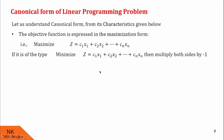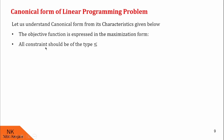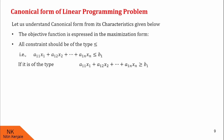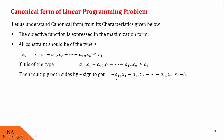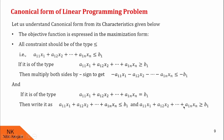After multiplying both sides by minus sign, we get: maximize z dash equal to minus z equal to minus c1x1 minus c2x2 up to minus cnxn. The second characteristic is that all constraints should be of the type less than or equal to. If a constraint is of the type greater than or equal to, then we multiply throughout by minus sign to convert it into less than or equal to type. If a constraint is of the type equal to, then we write that equation as both less than or equal to b1 and greater than or equal to b1.